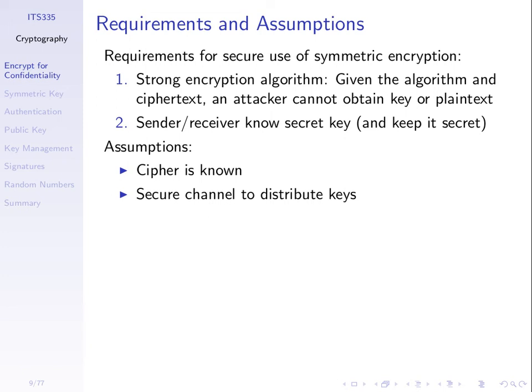Generally we assume that the algorithm — the cipher — is known by everyone in the world, including the attacker. So I want to encrypt a file and send it to someone; I use some algorithm to encrypt, but that algorithm is not secret. Everyone else knows the algorithm and the details, and probably has implementations of it. It's hard to keep algorithms secret. Military organisations can do it, but even then it's quite difficult because if you want to keep an algorithm secret you need to implement it in software or hardware, and it takes people to implement — keeping people from divulging information is hard. So generally in security we assume the algorithms are known, including by the attacker.